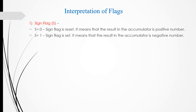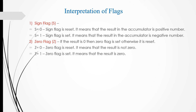Now we will see the interpretation of flags. For the sign flag: if D7 bit is 0, the sign flag is reset, meaning the result in the accumulator is a positive number. If S equals 1, the sign flag is set, meaning the result is a negative number. For the zero flag: if the result is 0, the zero flag is set; otherwise it is reset. If Z equals 0, the result is non-zero and the zero flag is reset. If Z equals 1, the zero flag is set, meaning the result is 0.